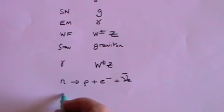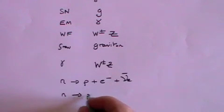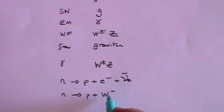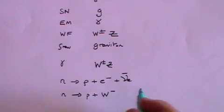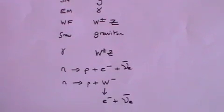What happens is that the neutron decays into a proton, plus a W minus boson. But that W minus boson very quickly decays in about 10 to the minus 25 of a second, into the electron, plus the anti-electron neutrino.